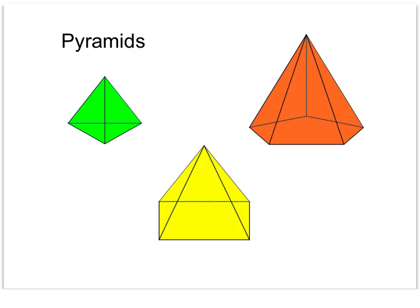Our last set of videos for chapter 12 cover two sections: the surface area of pyramids and the surface area of cones. We're going to start with pyramids. Looking at three different pyramids, just a reminder of how we would name these: the green one has a triangular base, so we call it a triangular pyramid; this has a rectangular base, a rectangular pyramid; and this has a pentagonal base, a pentagonal pyramid. It's named by the base.